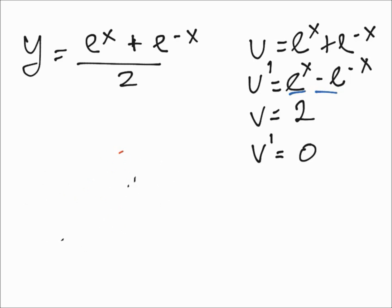And then just by plugging it in, we're going to have y prime. It's all going to be over v squared, so that's all over 4, and then we start with u prime times v, so we can just write the v first: 2 times (e^x - e^(-x)).